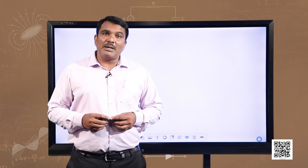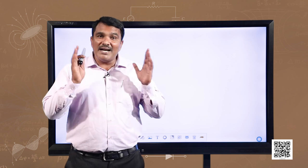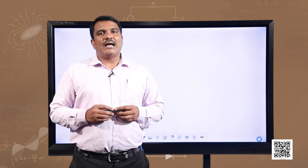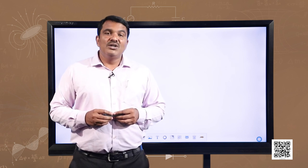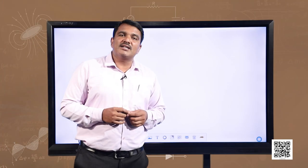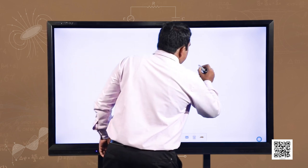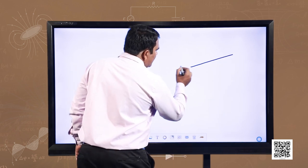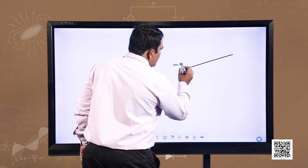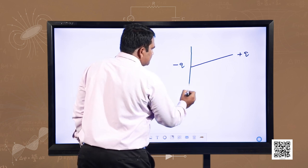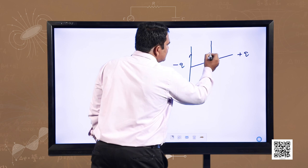A permanent electric dipole is a dipole which has its own electric dipole moment, and this dipole moment is not induced by any electric field. Now let us try to understand the behavior of an electric dipole by placing it in a uniform electric field. Let this be your dipole having charges minus Q and plus Q, and it is placed in a uniform electric field at any angle theta.